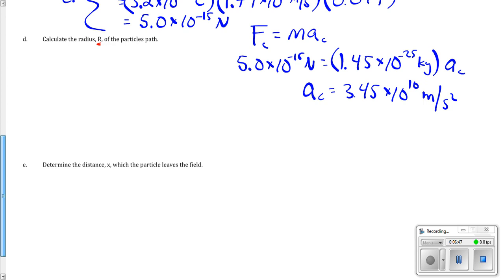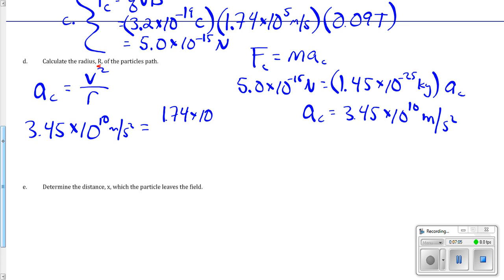Now, with Ac, you can calculate quantity squared over R. 3.45 times 10 to the 10th meters per second squared equals the velocity 1.74 times 10 to the 5 meters per second quantity squared over R. Do be careful with the math and realize that R is in the denominator, so just take care of the algebra.